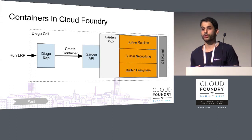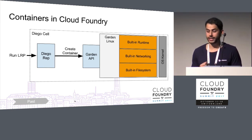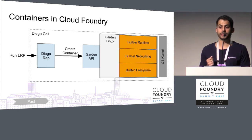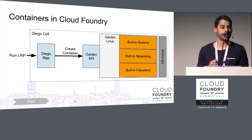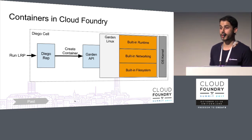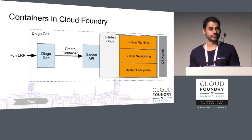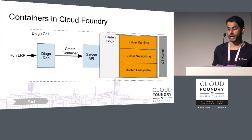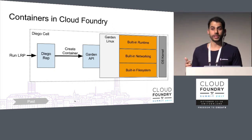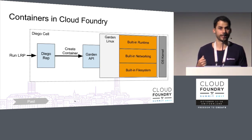Cloud Foundry picked the first solution. A team in London was spun up called Garden, which maintains a component called Garden Linux. Garden Linux implements the Garden API that speaks to the rest of the Cloud Foundry components, and also implements all the functions required to spin up a container. This component was large because it had a lot of built-in functionality: runtime, networking, and file system. It was very complicated because it was interacting with the kernel, which has always been a tricky part in software engineering.